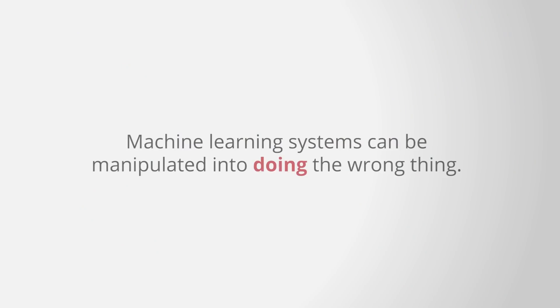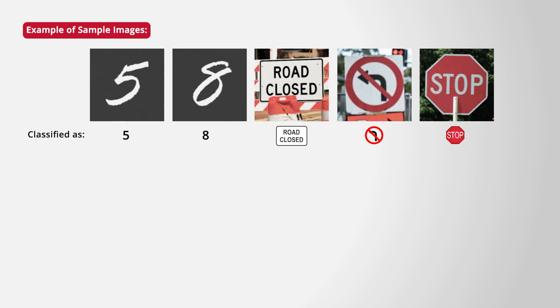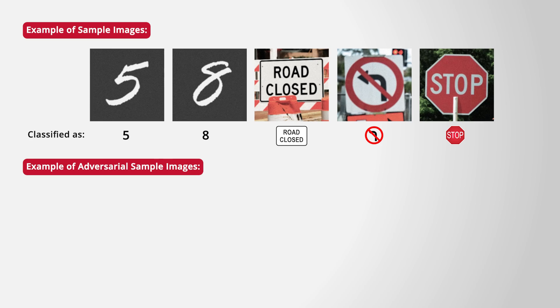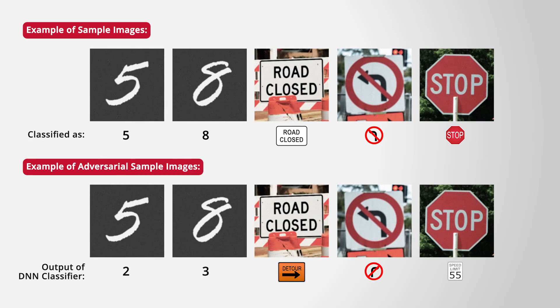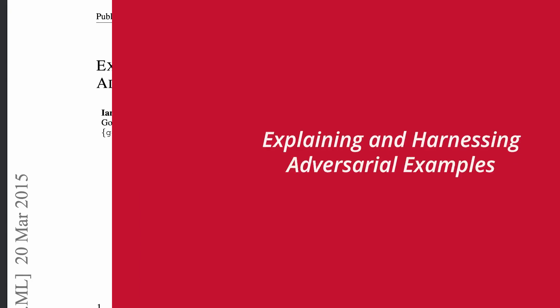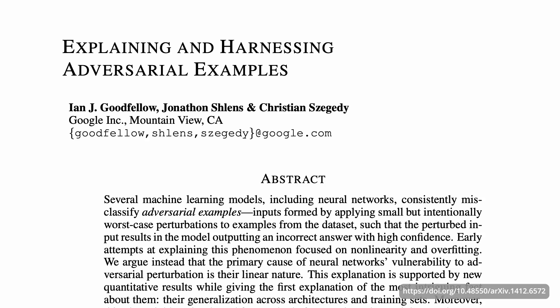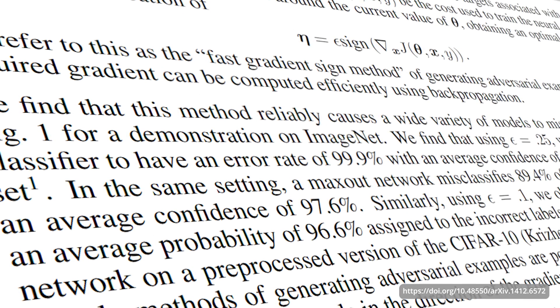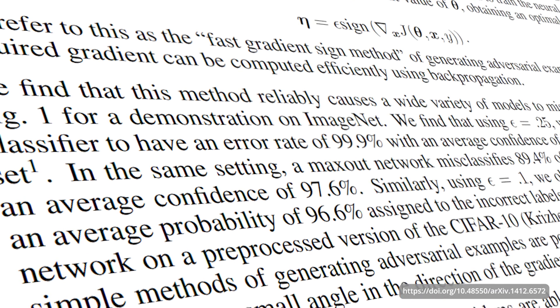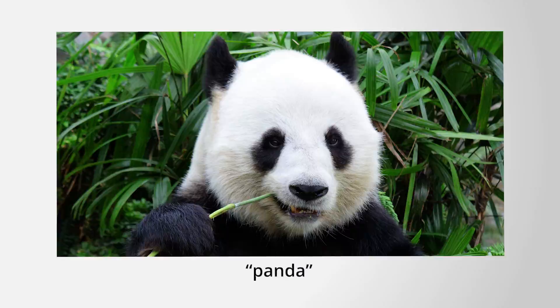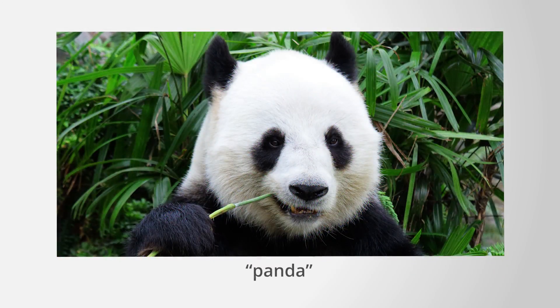Machine learning systems can also be manipulated into doing the wrong thing. This class encompasses vulnerabilities that cause a model to perform in an unexpected manner. Examples include attacks designed to cause a classification model to perform misclassification through an adversarial pattern — an evasion attack. Seminal work by Ian Goodfellow, Jonathan Shlens, and Christian Szegedy adds an adversarial noise pattern, imperceptible to humans, to an image to force misclassification. Researchers take an image of a panda the ML model classifies correctly, apply a specific noise pattern, and the resultant image still appears to be a panda to humans — but the ML model produces a prediction result of gibbon.